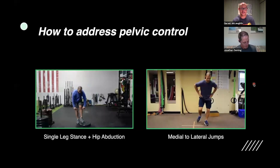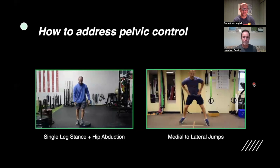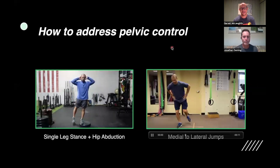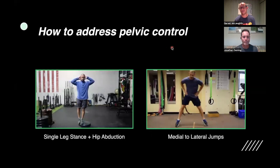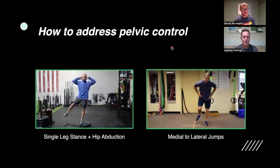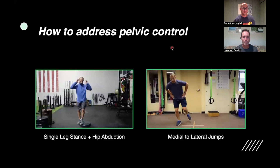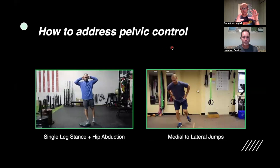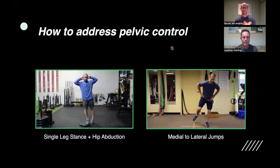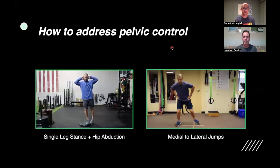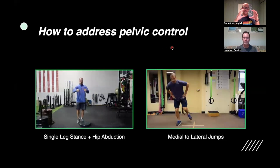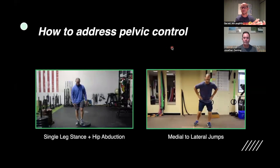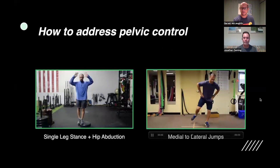Our final step, whether rehabbing or improving performance, is always incorporating some type of plyometric drill — teaching ourselves how to withstand force, absorb it, and stay in the right position as we bound from one leg to the next. These are medial to lateral jumps: hands around my hips, jumping laterally side to side, creating more activation through the glute medius. As I land, taking a second on each foot to stabilize, bend into the ankle, knee, and hip while maintaining levelness through the pelvis. Less distance is always better initially — can we control ourselves in a controlled manner, then jump wider over time as we build more force and control through the leg and pelvis?